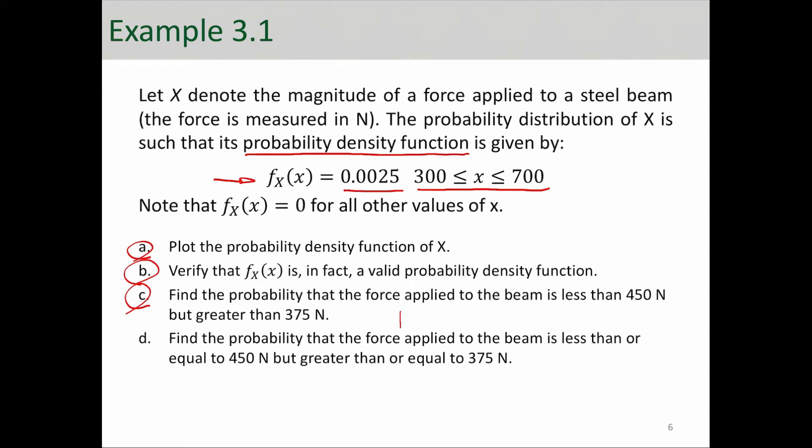So, that essentially says, what's the probability that X is between 450 and 375? Okay. And we know that to calculate that probability, we essentially need to integrate from 375 to 450 over that function.